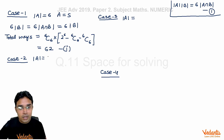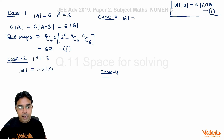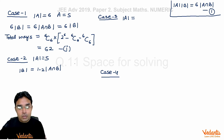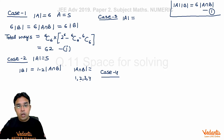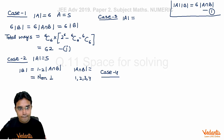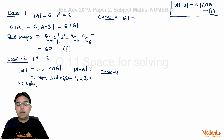Case 2: |A| = 5. From equation 1, |B| = 1.2 · |A ∩ B|. Since A has five elements and B is a smaller set, |A ∩ B| can be 1, 2, 3, or 4. However, for all four values, 1.2 times the intersection gives a non-integer result. Since |B| must be an integer, there is no valid solution for this case.